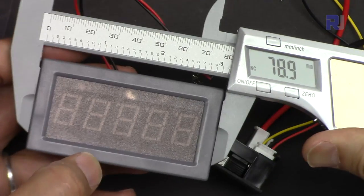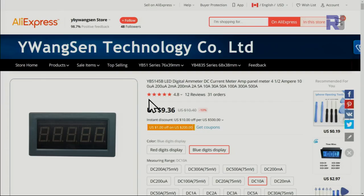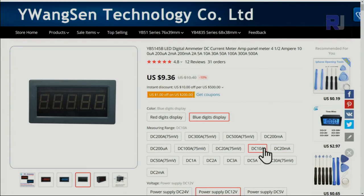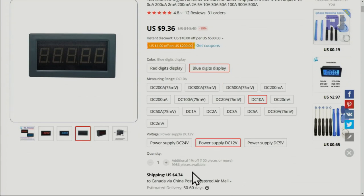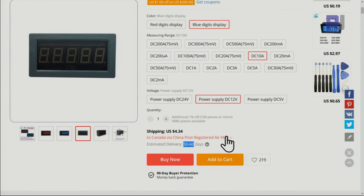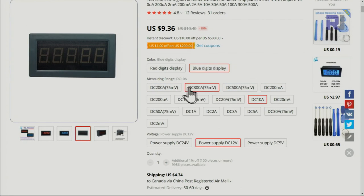I bought this from this store, Y Wang Sen technology. The 10 ampere version is sold for $9.36 plus $4.34 shipping which will take 50 to 60 business days, so it will arrive in 80 days. But if you want to receive it faster select a different shipping method. You can select 200 ampere, 300, 500 ampere with shunt, or you can get 20 milliampere, 1 ampere, 2 ampere, 3, 5, or even 2 milliampere very accurate. For lower values I suggest getting 1 ampere.